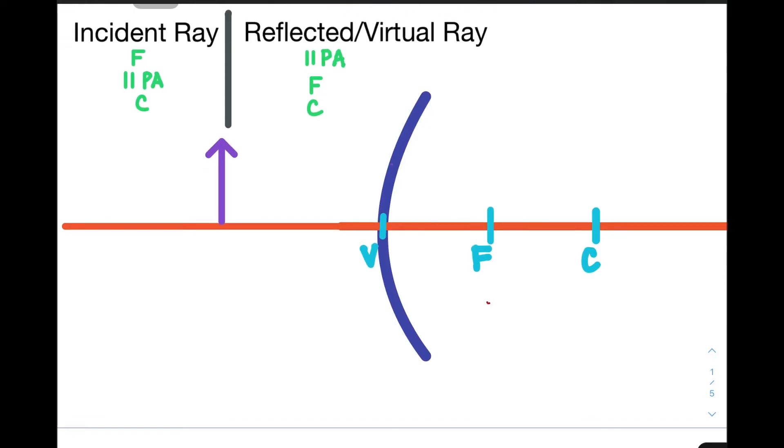Now, before we continue, we must remember the following rules in how to predict the behavior of a light beam using the Ray method. First, the incident ray, if it is aligned with the focus, it will be reflected parallel with the principal axis.